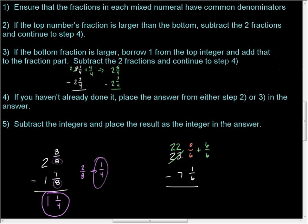We borrowed one. Okay, so now, that means that we're going to have six-sixths on top. All right, so now, we can go ahead and subtract the two fractions. So, six-sixths minus one-sixth gives us five-sixths. And if you haven't already done it, place the answer from two or three in the answer, and we did.